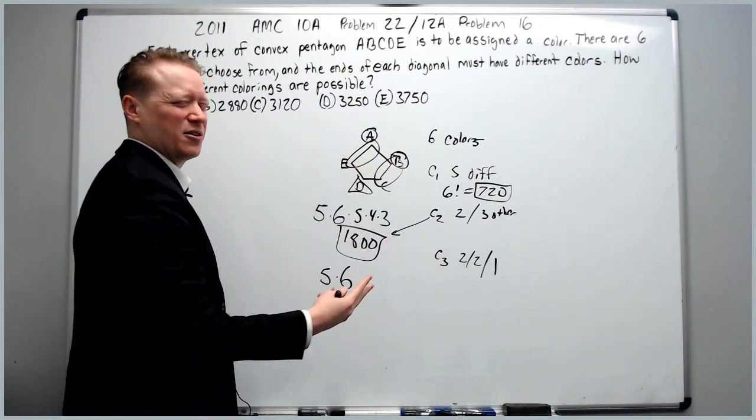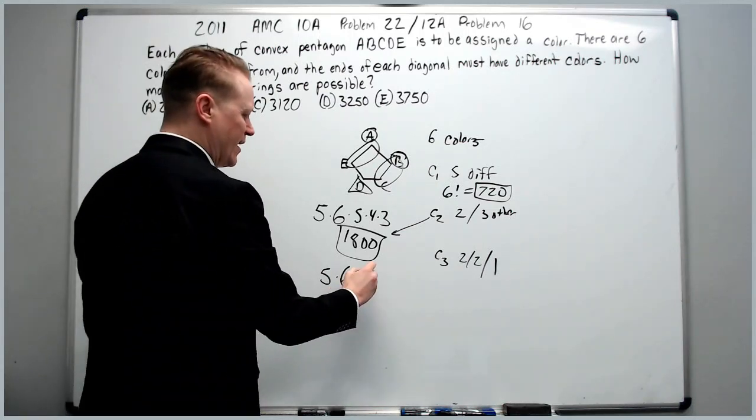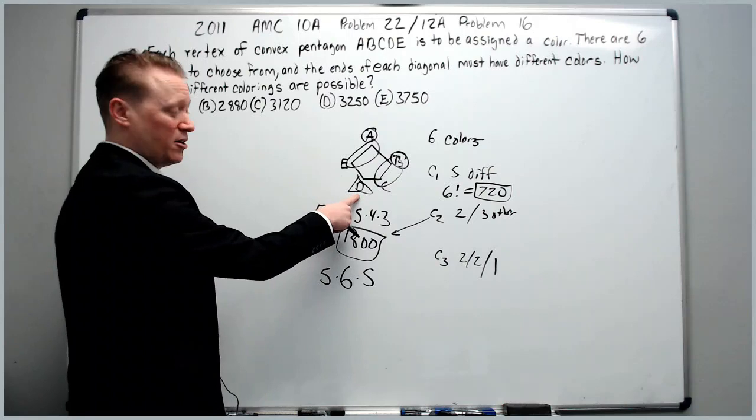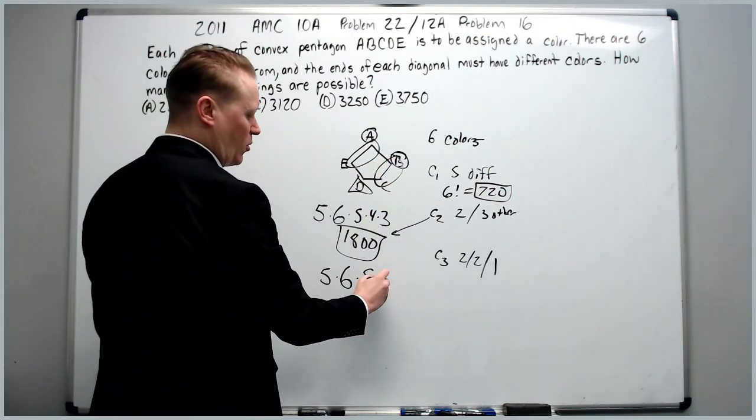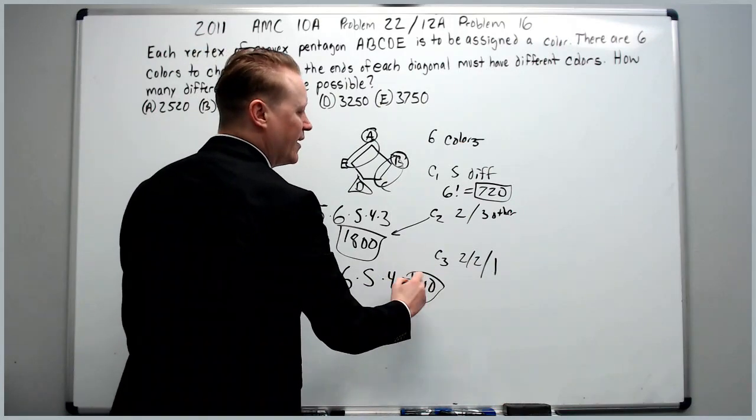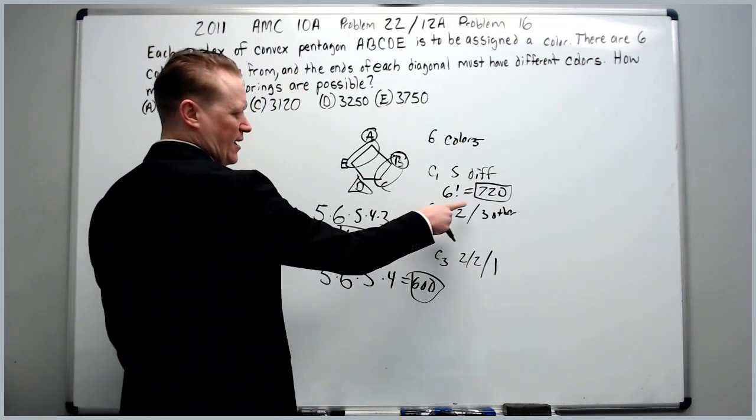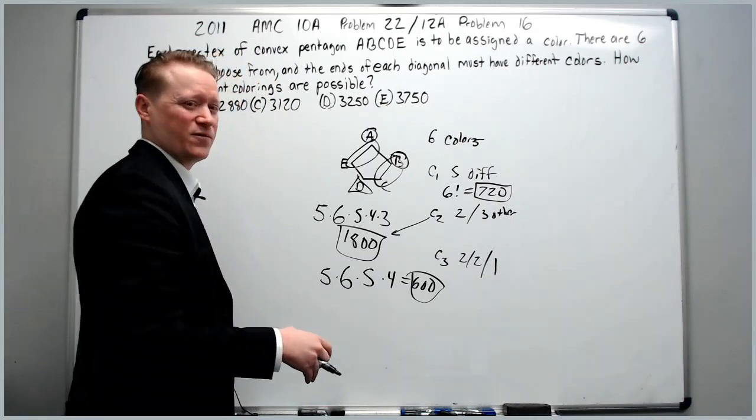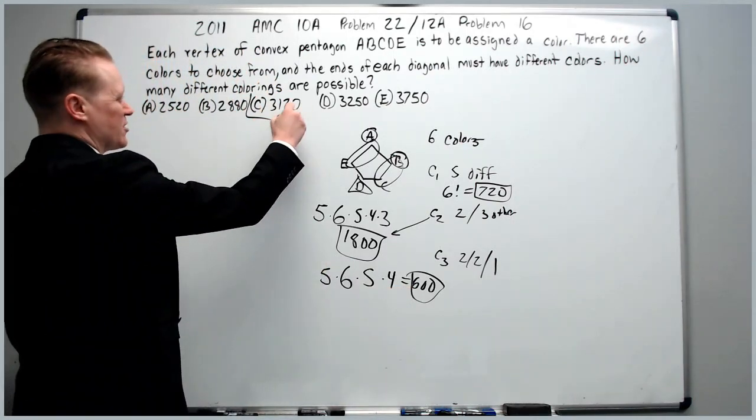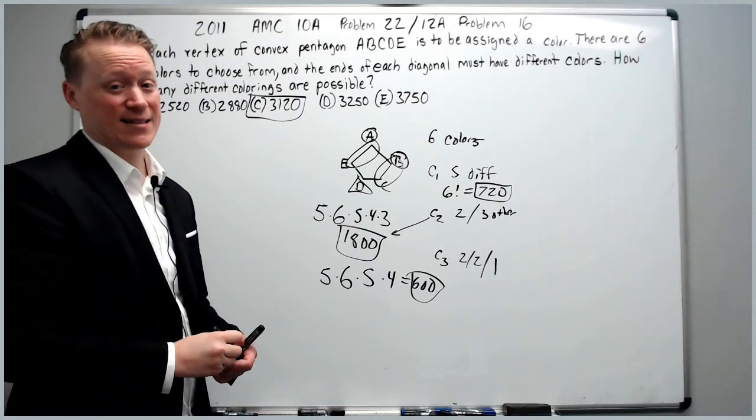Then you just choose what color do you want A and E to be. That's going to have five choices remaining because D took a color already. And then BC will have four choices, 30 times 20 is 600. Then this gives 1800 plus 720 is 2520 plus another 600 is 3120. And that's the answer.